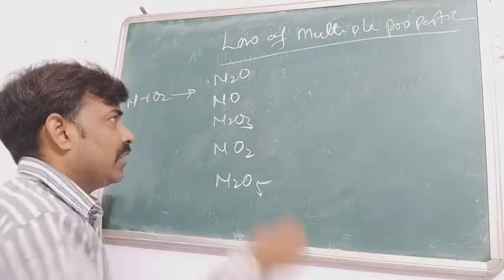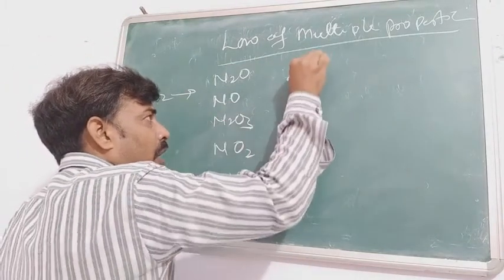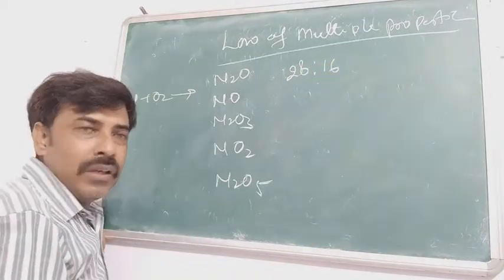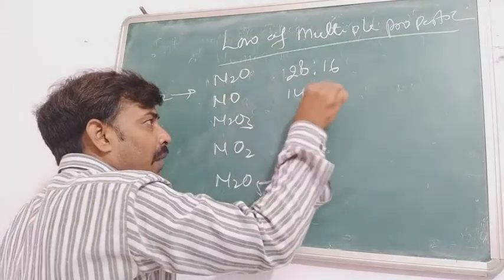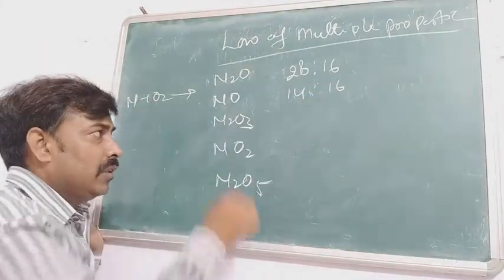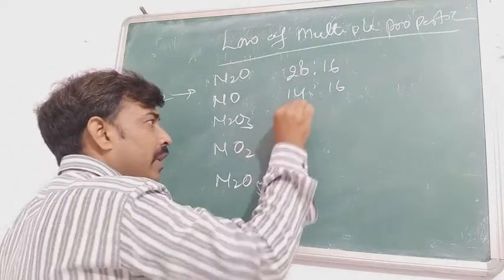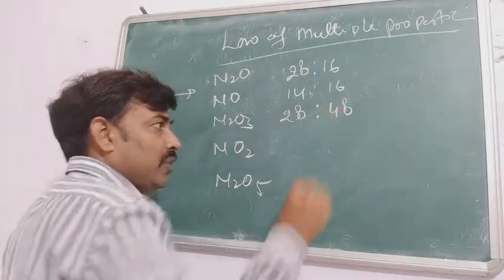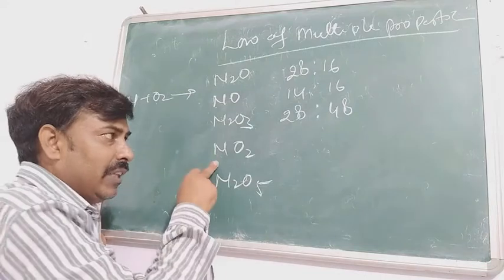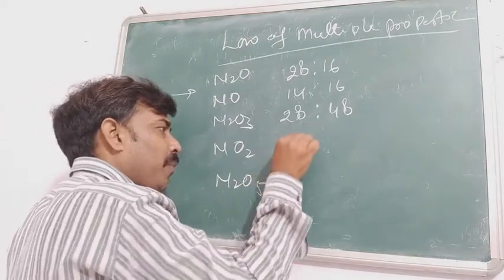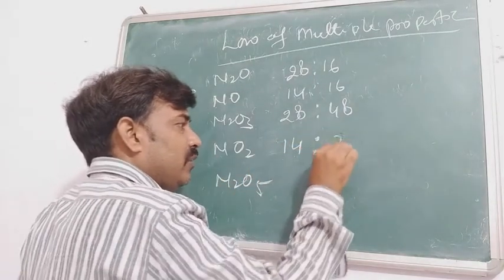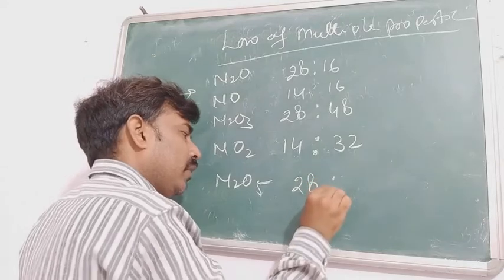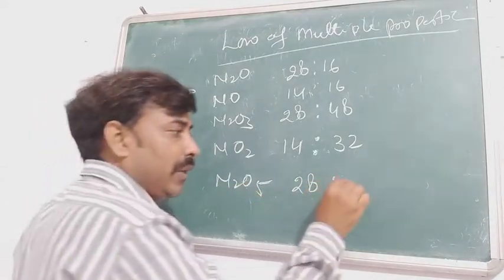What is the mass ratio of these elements? When we look at the mass ratio: 28 g of nitrogen reacts with 16 g of oxygen in the first case. In the second case, 14 g of nitrogen reacts with 16 g of oxygen. In the third case, 28 g of nitrogen reacts with 48 g of oxygen. In the fourth case, 14 g of nitrogen reacts with 32 g of oxygen.